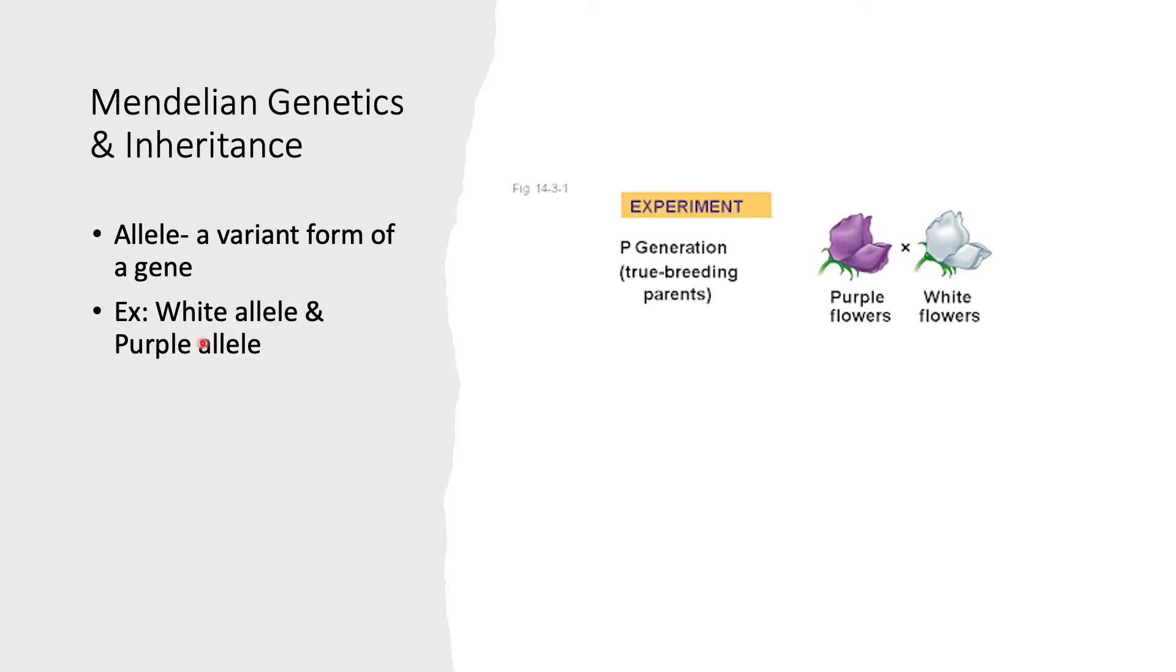In layman's terms, allele is a variant form of a gene. It's on a locus of a chromosome, on a certain position on a chromosome. An example could be a white allele and purple allele in this classic example, the purple and white flowers.